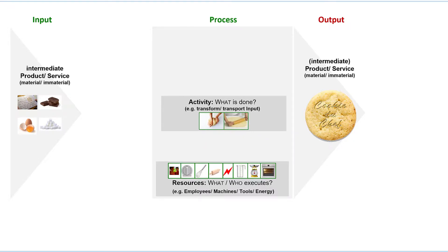There must of course be someone and/or something that executes the activity. Employees, machines, tools, and energy might be these resources of the process. Here you will find our chef, the timer, the whisk, and the other resources through which and with which the activity is carried out.